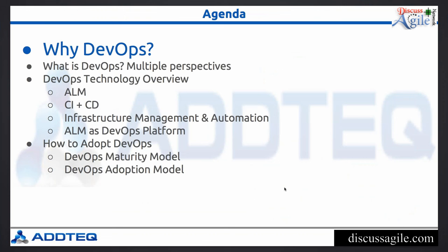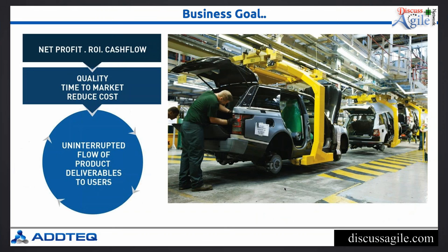The high-level business goal boils down to net profit, ROI, cash flow, quality, time to market, and reduced cost. Fundamentally, the bottleneck is the interruptions in flow from when a customer requests something to when it gets delivered. If you compare this to manufacturing automation — where everything is just-in-time and the process is as smooth as possible — what can software organizations do to ensure similarly smooth delivery?